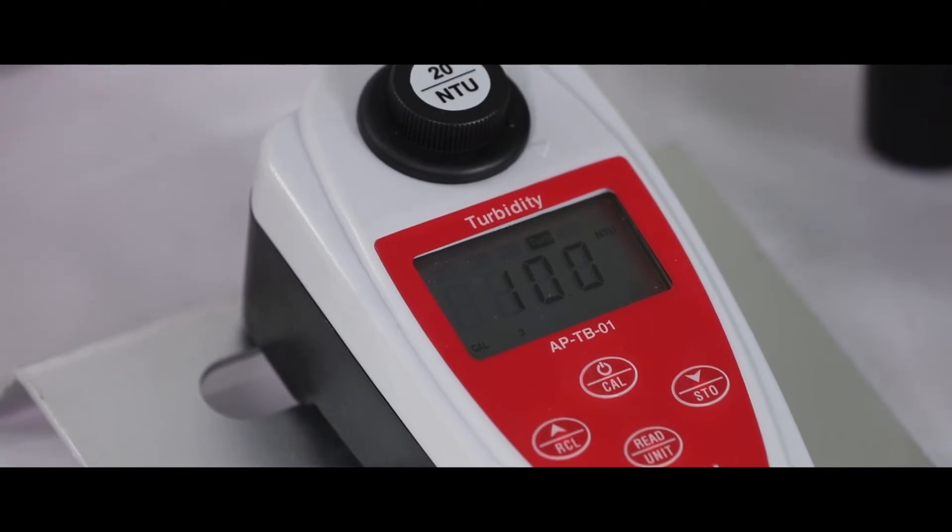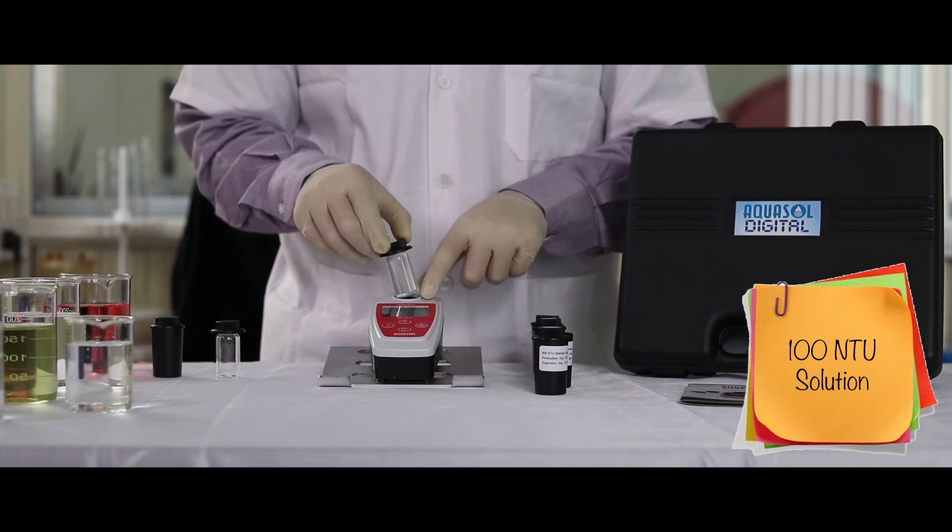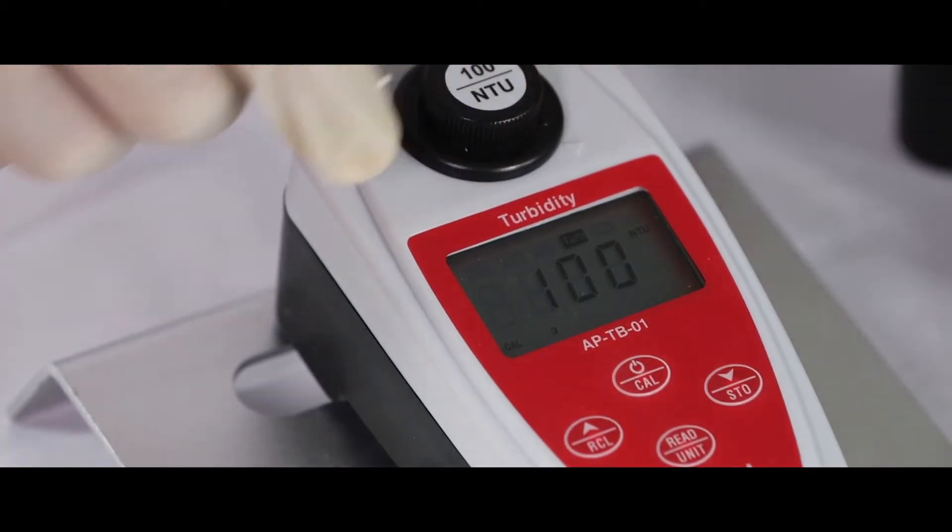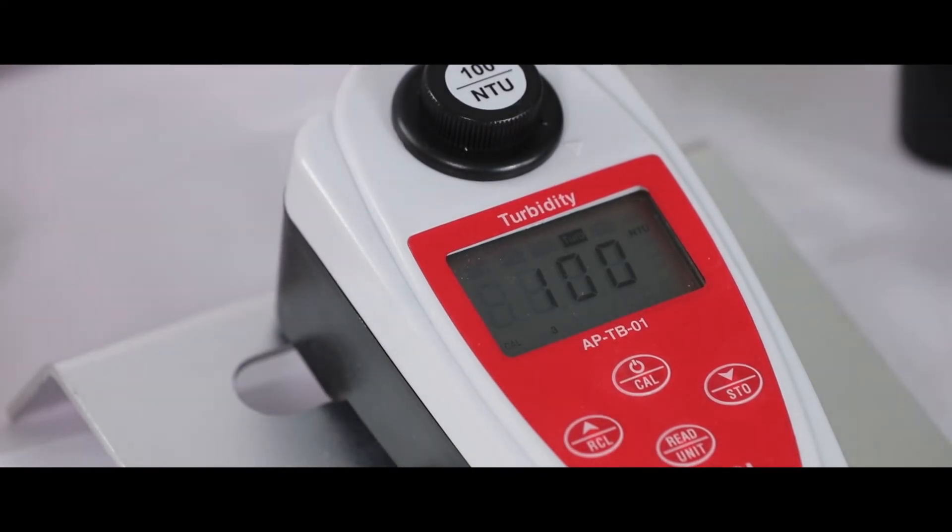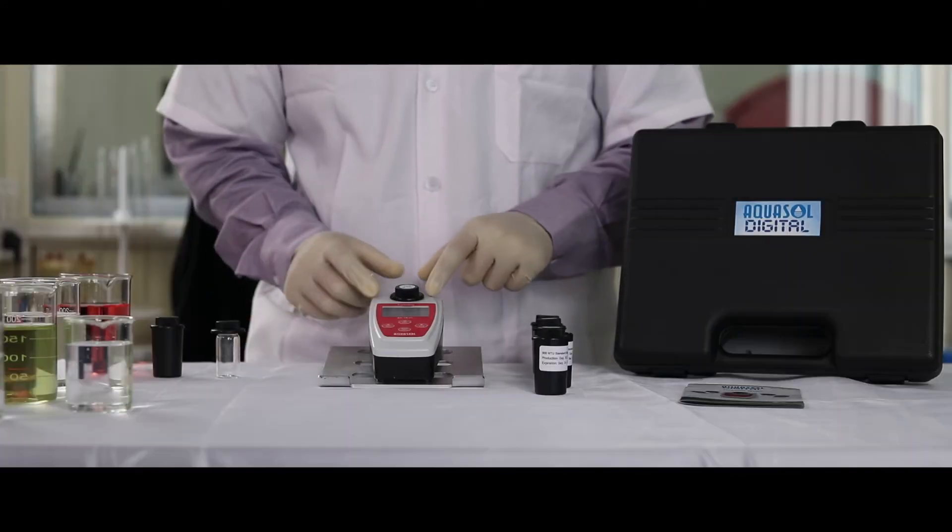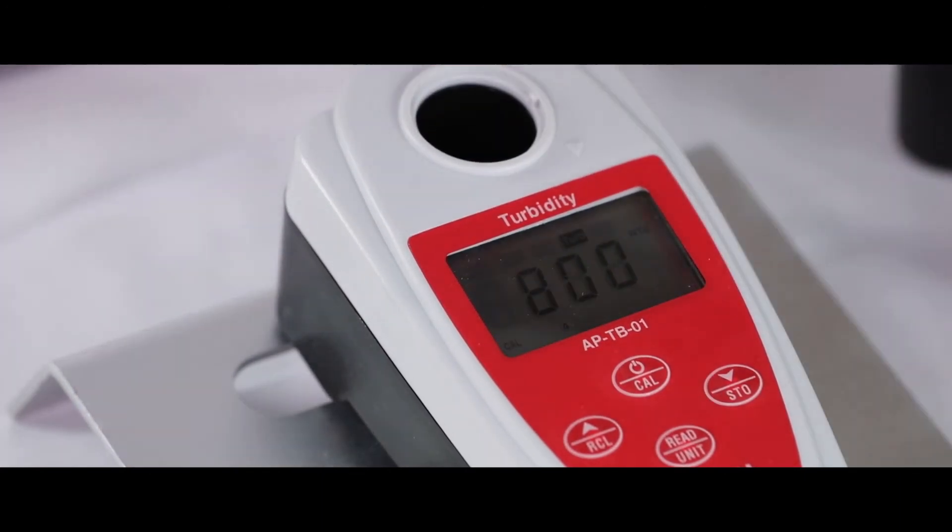To calibrate, replace the 20 NTU with 100 NTU, then press the read key. When 100 NTU is calibrated, repeat the process for 800 NTU.